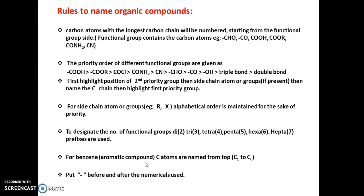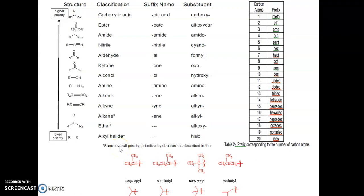When naming a benzene or aromatic compound, you number the carbon atoms from the top carbon atom — that is carbon number one — consecutively to carbon number six. The last point is: whenever you write the position number of a functional group or side chain atom, you must put a hyphen before and after the number. For example, writing 4-methyl means hyphen-four-hyphen-methyl. You must always use the hyphen.